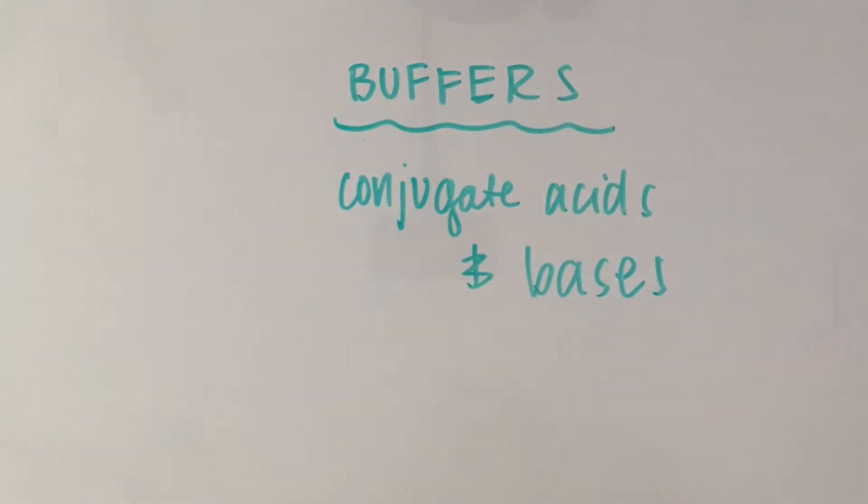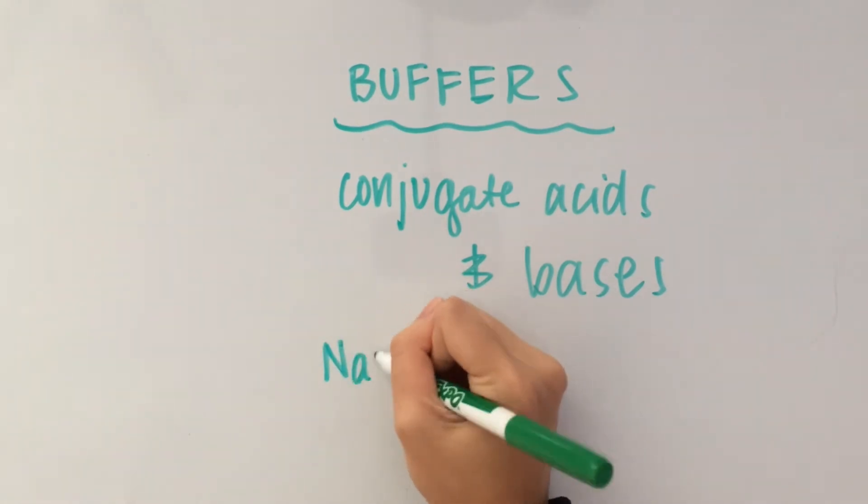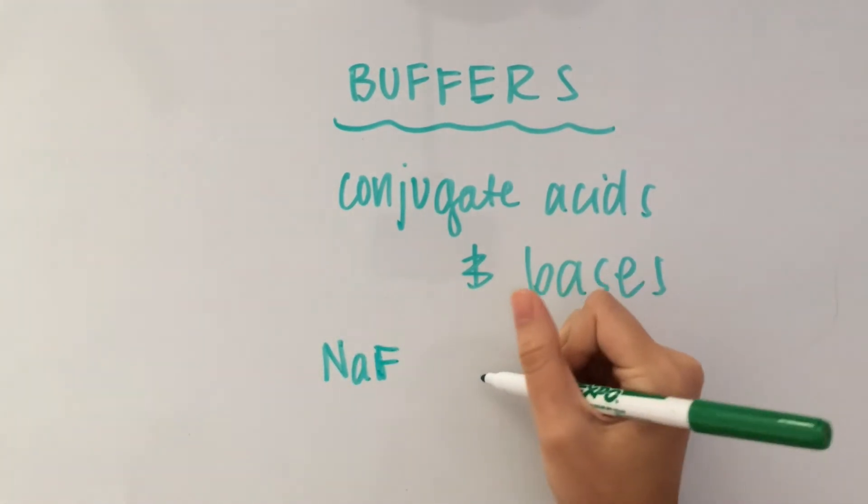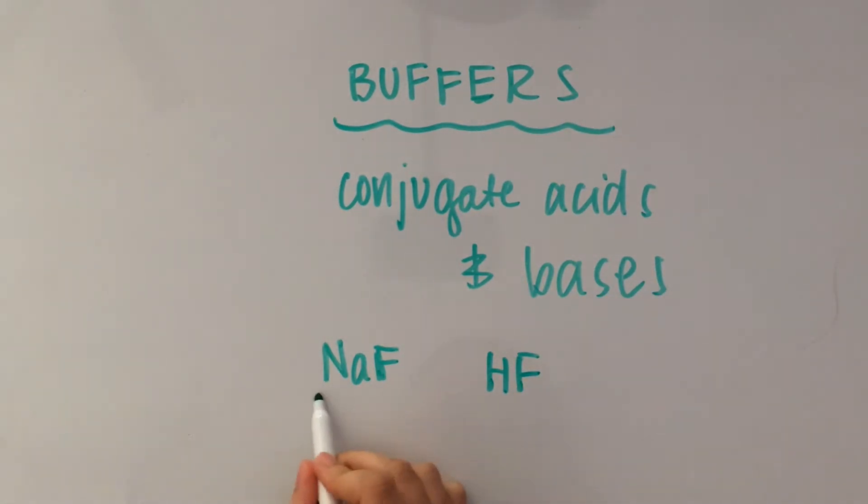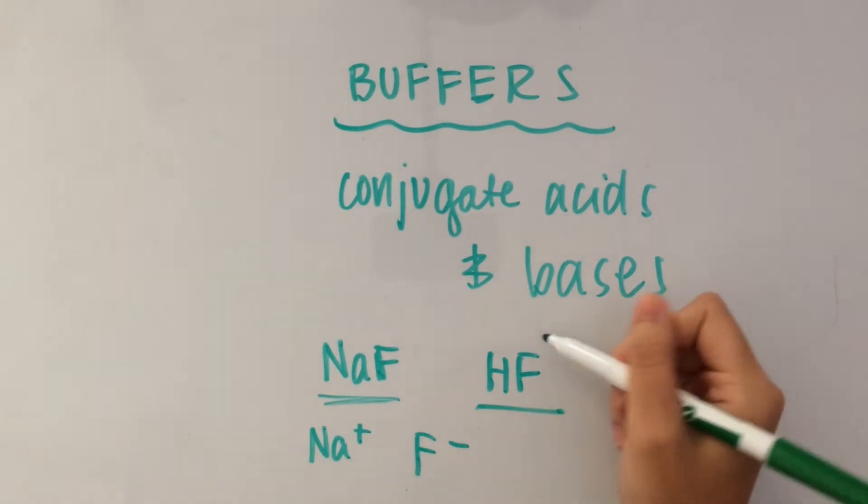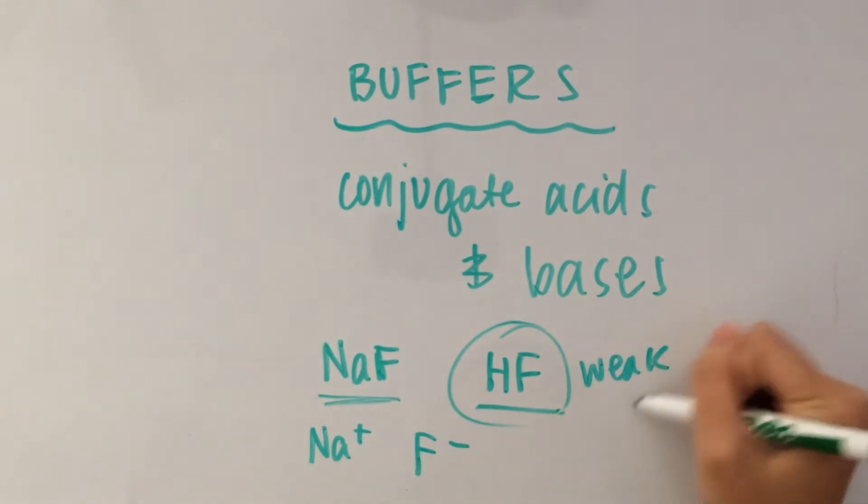An example of this would be with a salt, so let's say NaF and HF, which is a weak acid. So when you have a solution of NaF, that's going to result in a solution with Na plus ions and F minus ions. But when you add HF into that solution, we now have HF, which is a weak acid, and F minus, which is its conjugate base.